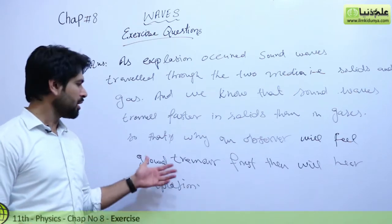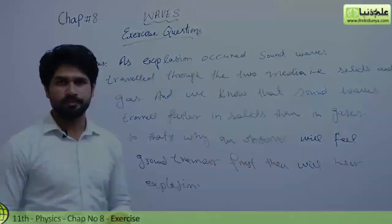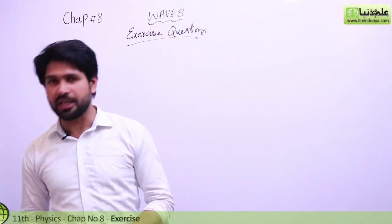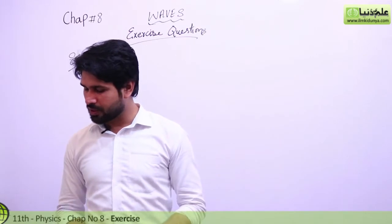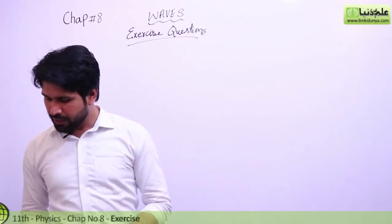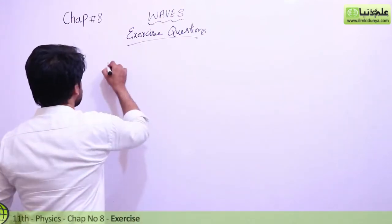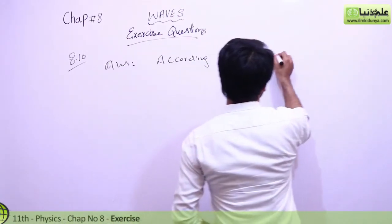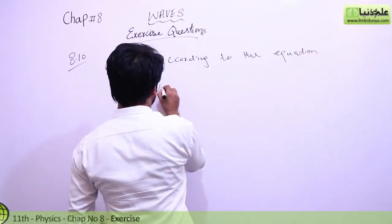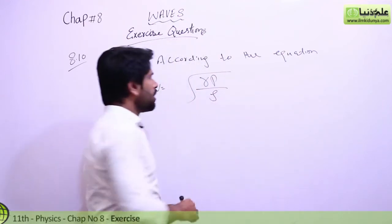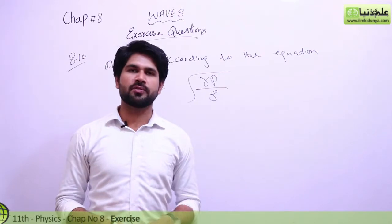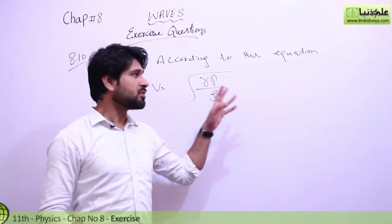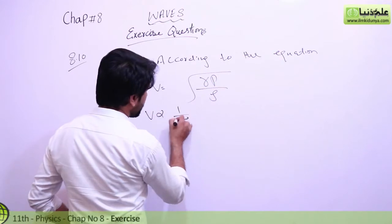Now we are going to discuss next exercise question 8.10: explain why sound travels faster in warm air than in cold air. I repeat: explain why sound travels faster in warm air than in cold air. The answer of this question can be written as: according to the equation, we know that the speed of sound is equal to the square root of gamma P over rho. We have studied that the speed of sound does not depend upon the pressure.